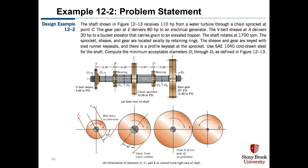Let's take a look at example 12-2. In this problem, a shaft receives 110 horsepower from a water turbine through a chain sprocket at point C. The gear pair at E delivers 80 horsepower to an electric generator. The V-belt shiv at A delivers 30 horsepower to a bucket elevator. The shaft rotates at 1700 rpm. The sprocket, shiv, and gear are located axially by retaining rings. The shiv and gear are keyed with sled runner key seats, and there is a profile key seat at the sprocket. We use SAE 1040 cold drawn steel for the shaft and compute minimum acceptable diameters D1 through D7.